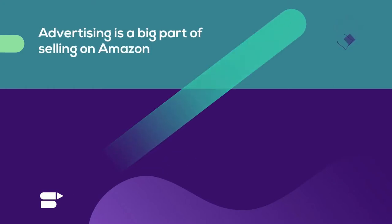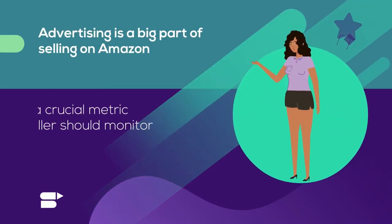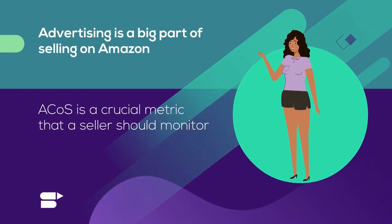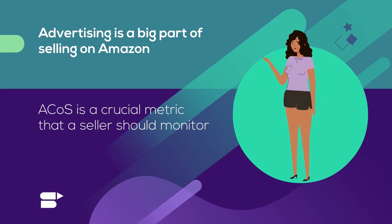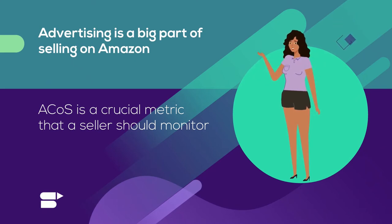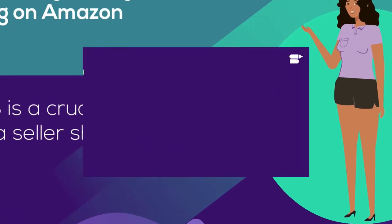As you already know, advertising is a big part of selling on the Amazon platform. Therefore, the advertising cost of sales, or ACoS, is one of the most crucial metrics that a seller should monitor in order to create a successful business.